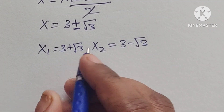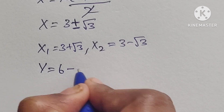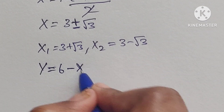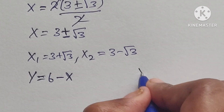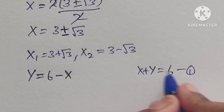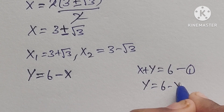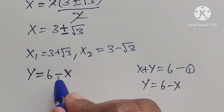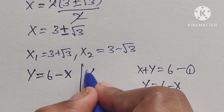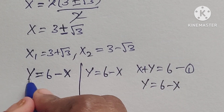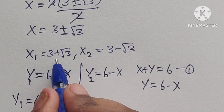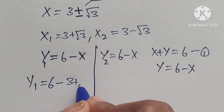Now we have to find the y values. From equation 1, y equals 6 minus x. We will substitute each x value. For y1, we substitute x1 equals 3 plus square root of 3 into y equals 6 minus x.